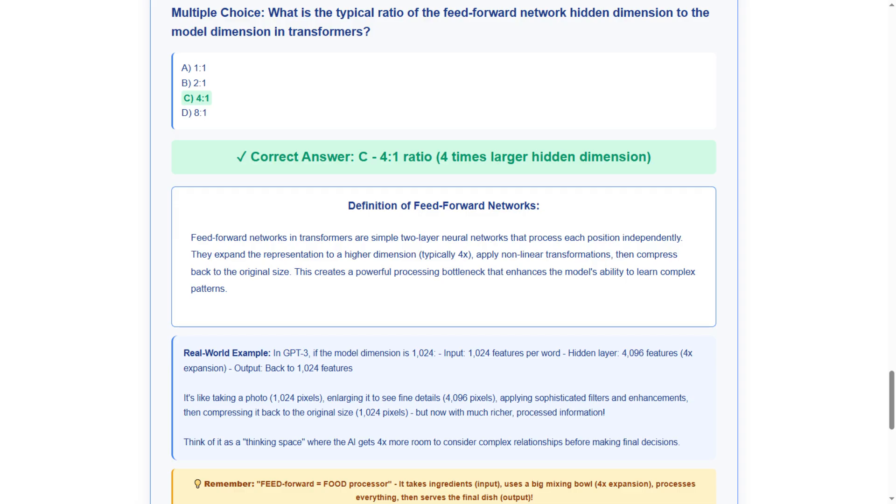Our final question today covers feed-forward network architecture. What is the typical ratio of the feed-forward network hidden dimension to the model dimension in transformers? Option A, 1 to 1. Option B, 2 to 1. Option C, 4 to 1. Option D, 8 to 1.